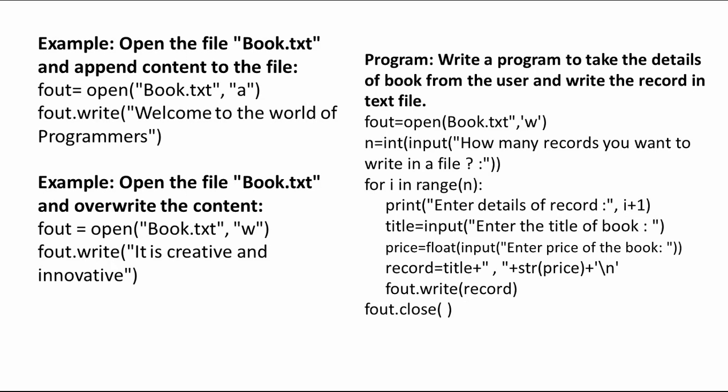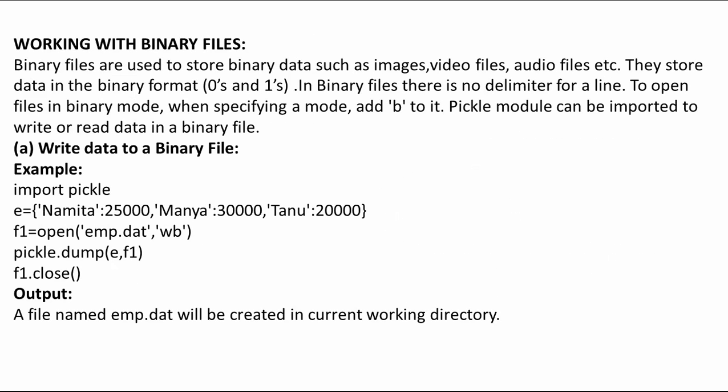In this program, the user is supposed to enter the title and price of a book. The user is asked how many records they want to enter, stored in n. Using a for loop, the user enters the title and price of each book. The title and price are concatenated into a third variable, record, and then f_out.write(record) writes it. Outside the for loop, the file reference f_out is closed. This is how we can write one or multiple records to a text file.